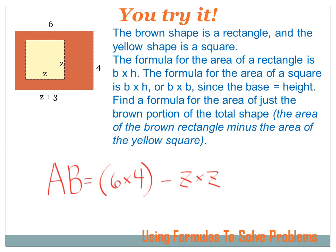Now, some of you may have gotten a different answer than I got, and I don't think you're necessarily wrong, because I used, for the area of the brown rectangle, I used the base, Z plus 3, times the height. And that was correct. But if you used the 6 and multiplied it by 4 to get the area of the brown rectangle, you were also right. It was perfectly correct to say that the area that's in brown equals 6 times 4 minus Z times Z.